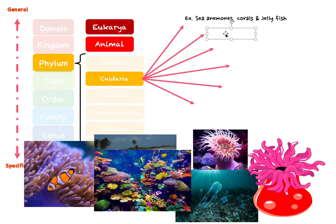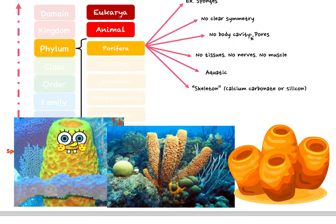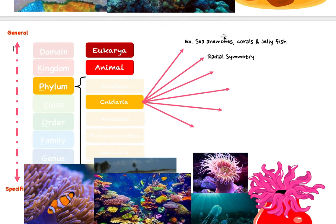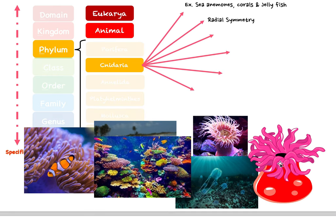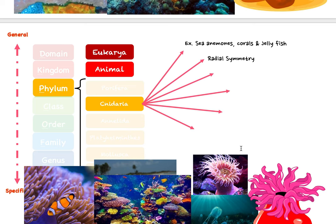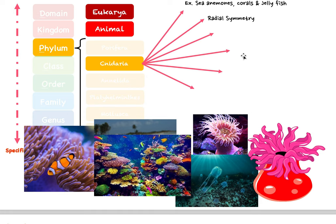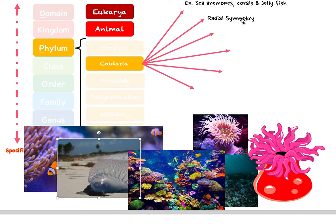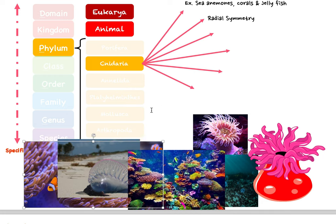Cnidaria have radial symmetry. Notice Porifera had no clear symmetry, but Cnidaria have radial symmetry — meaning if you look at them from the top, you see a circular shape, and no matter how you cut through the middle it's always going to be symmetrical. This is true for jellyfish, anemones, and similar organisms. There are always some exceptions to every rule.